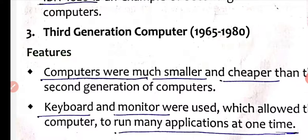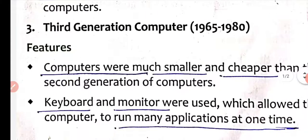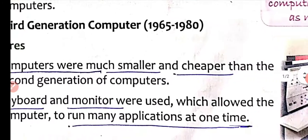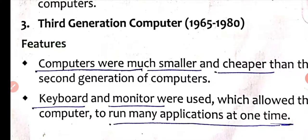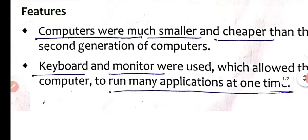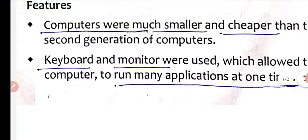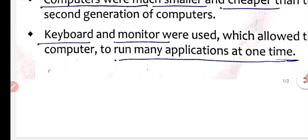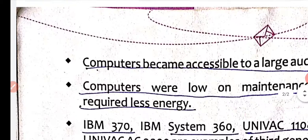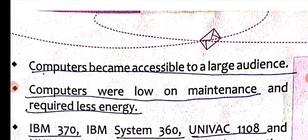Third generation computers were much smaller and cheaper than second generation computers. They are cheap and fast. Keyboards and monitors were used, which allowed the computer to run many applications at one time. Computers became accessible to a large audience.